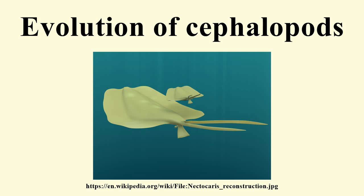The Yochelcionellids have given rise to the snorkel hypothesis. These fossils are aseptate helcionellids with a snorkel-like tube on one surface. The snorkel has been seized upon as characteristic of a cephalopod-like water circulatory system, or perhaps as a precursor to the siphuncle. However, neither of these theories have been borne out.